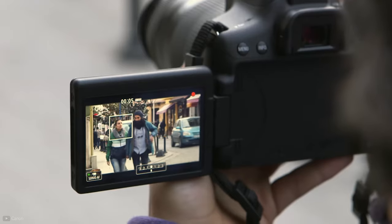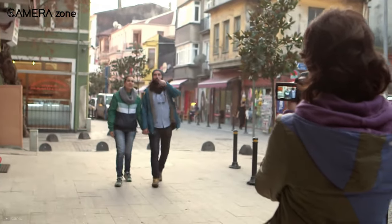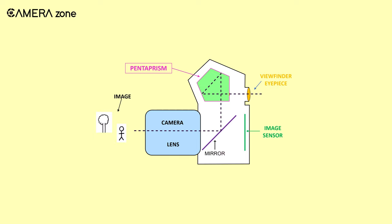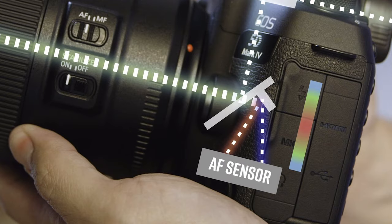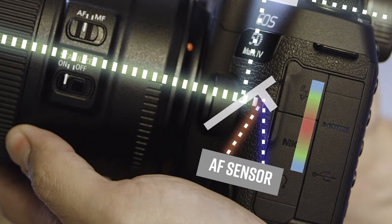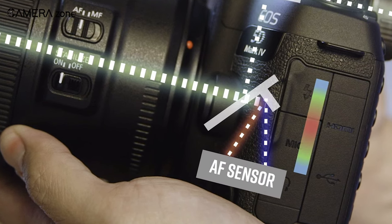Now let's talk about phase detection autofocus — a more advanced technology than contrast detection. In traditional digital cameras, light travels through the lens and gets reflected by a mirror positioned just before the camera sensor to the pentaprism, and then to your eyes through the viewfinder. But before entering the pentaprism, some light also passes through and goes to another mirror placed at about a 45-degree angle. This slanted mirror divides the light into two beams, making two images of the actual scenery, and reflects them downwards where the phase detection autofocus sensor is placed.